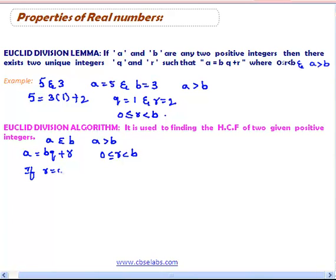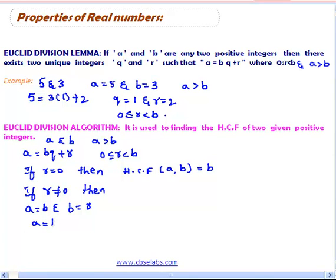If r is equal to 0 then HCF of a, b is equal to b. If r is not equal to 0 then take a is equal to b and b is equal to r. Then apply Euclid division lemma to this a and b and write as a is equal to bq plus r.